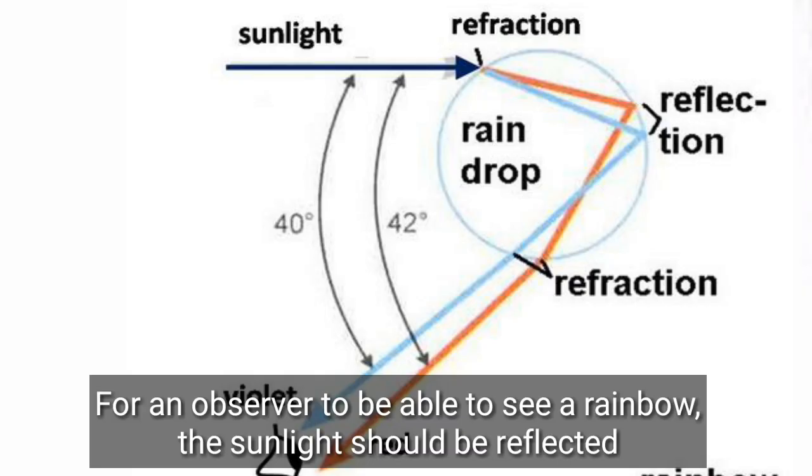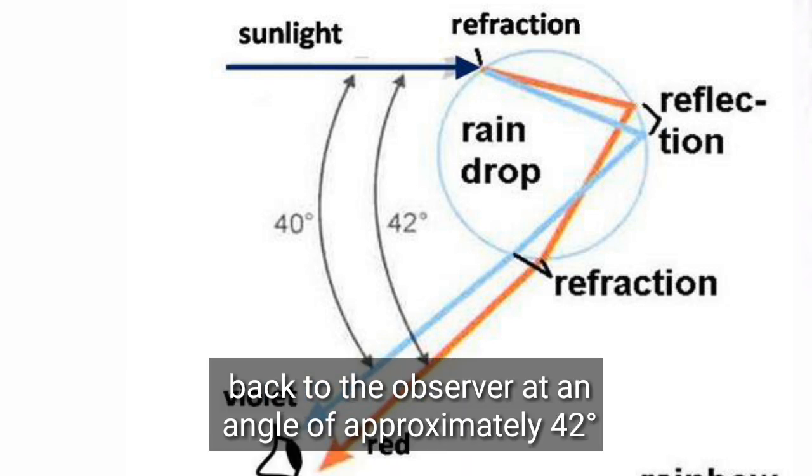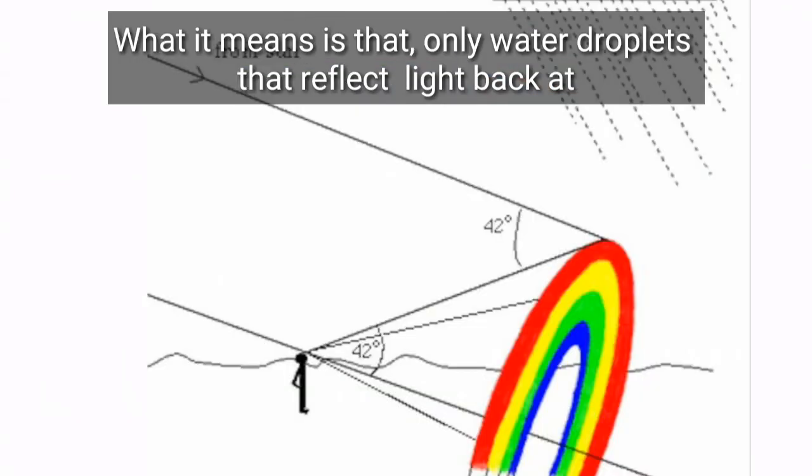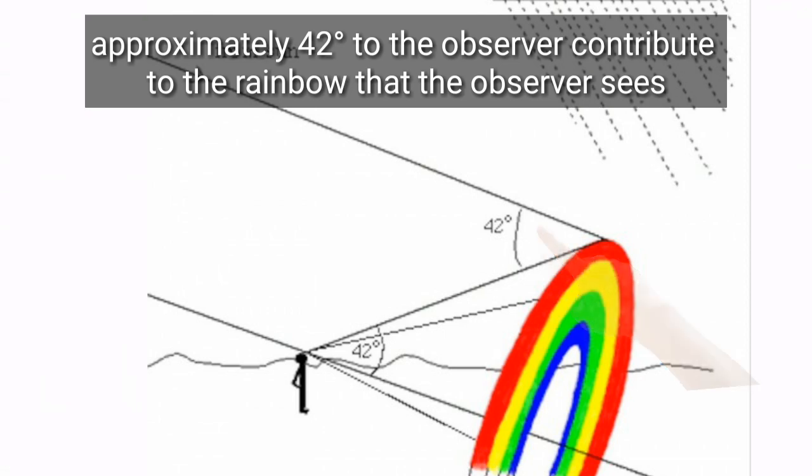What this means is that only water droplets that reflect light back at approximately 42 degrees to the observer contribute to the rainbow that the observer sees.